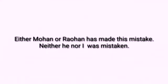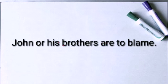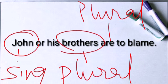Bear in mind that if one of the nouns connected by 'or/nor' is plural, the following verb will be plural. For example: 'John or his brothers are to be blamed.' Here the first noun is singular but the second noun is plural, so the verb agrees with the second, plural noun.